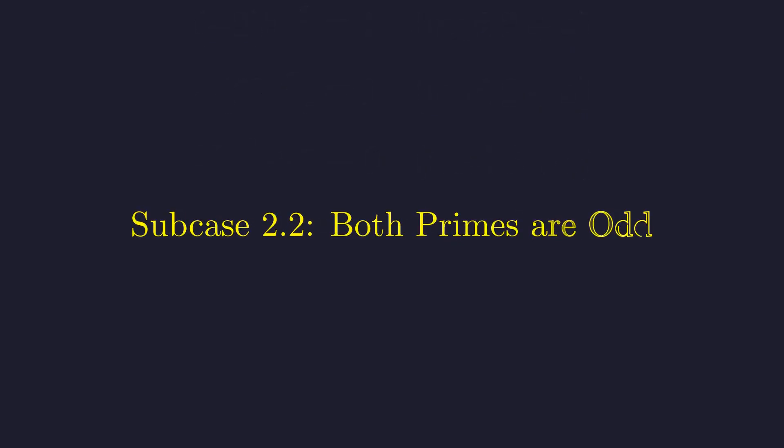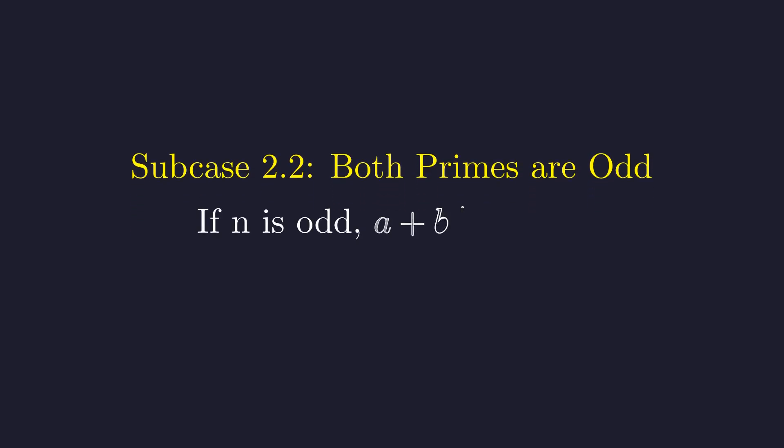This leaves our final most interesting case. What if p and q are two different odd primes? Here we can use a classic divisibility identity. For any odd integer n, a plus b always divides a to the n plus b to the n. Since p and q are both odd primes, we can use this identity twice.